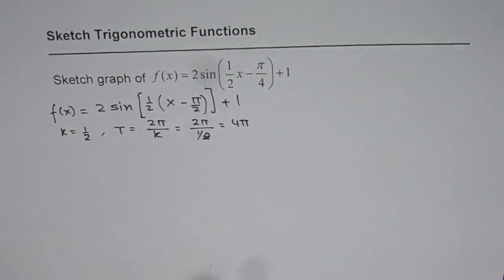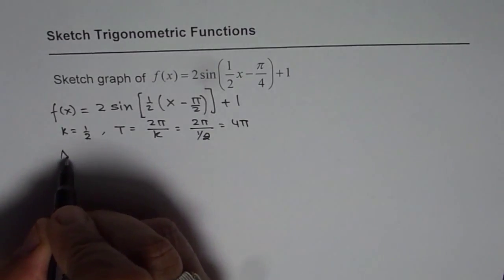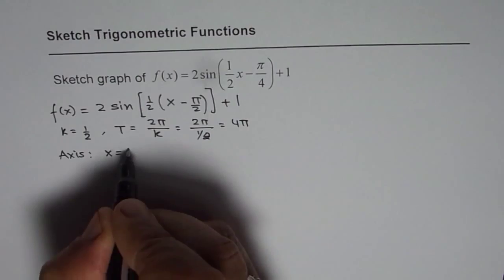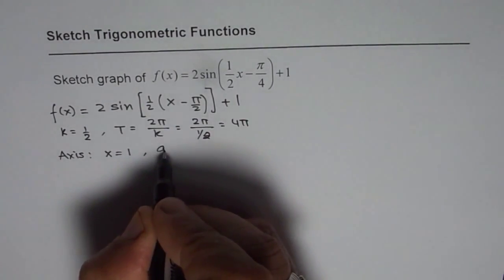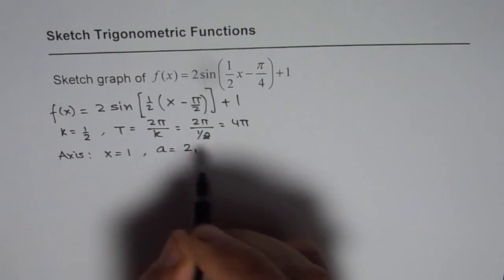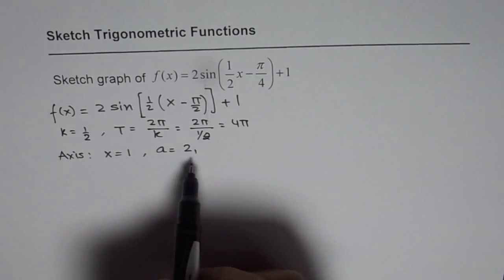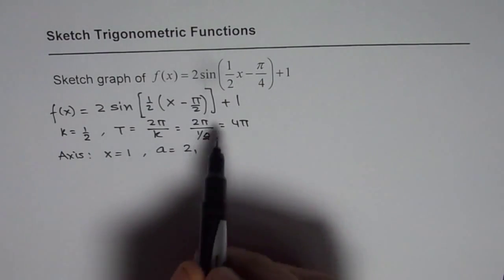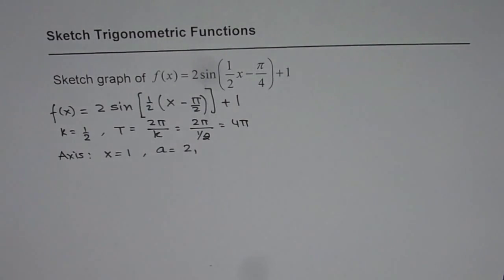So 4 pi is the time period for the sine function. The axis is at x equals 1. Amplitude a is 2. So these are the different values which you can get from here itself and they will help us to sketch. Now let us see how to sketch this kind of a function.